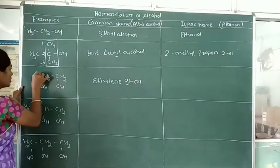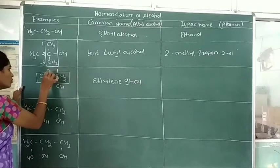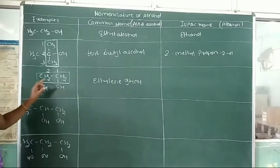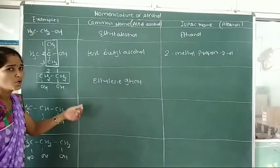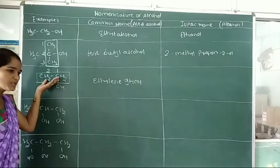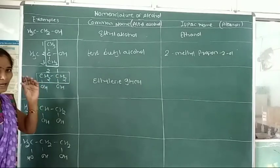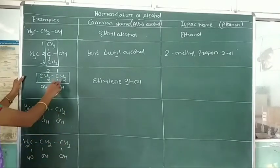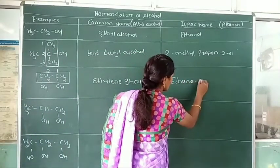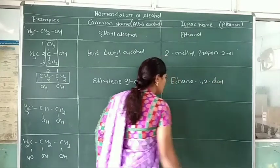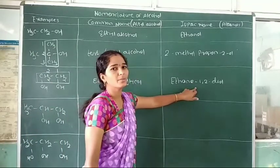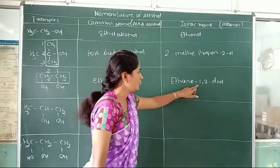In the IUPAC system, select the longest continuous chain. When more than one hydroxy group is attached to the selected carbon chain, we use a prefix. Here, 2 hydroxy groups are present, so we use the prefix 'di'. The IUPAC name of this compound is ethane-1,2-diol. In these examples with multiple hydroxy groups, the 'E' ending of the parent alkane remains, and 'OL' is added with the prefix 'di'.